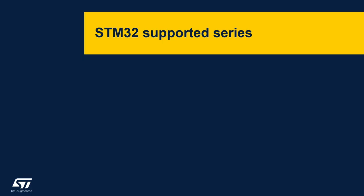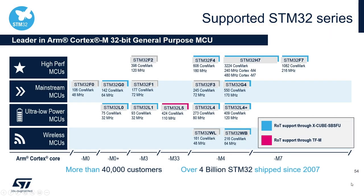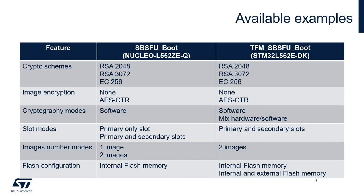So which microcontrollers are currently supported by the TFM package? The STM32Cube TFM application example is available today for STM32L5 only, which is the first STM32 with ARM TrustZone support. Secure boot and secure firmware update reference code for other STM32 families are included in the STM32Cube expansion software X-CUBE-SBSFU. The package includes two examples for STM32L5: a basic configuration running on a Nucleo L552 board, and an advanced configuration running on the STM32L562 discovery kit, which is the full TFM solution and the reference code for this presentation.